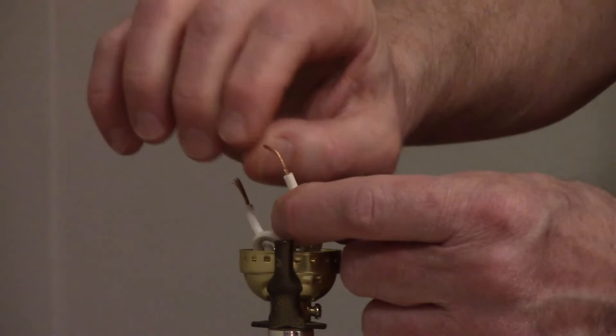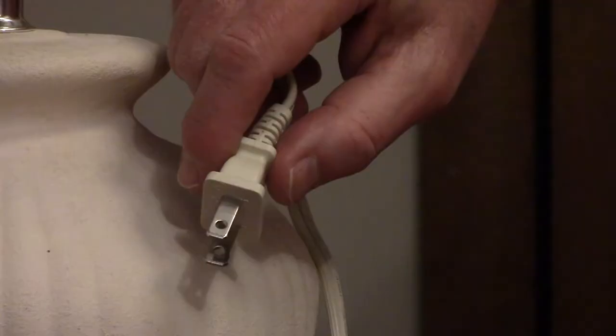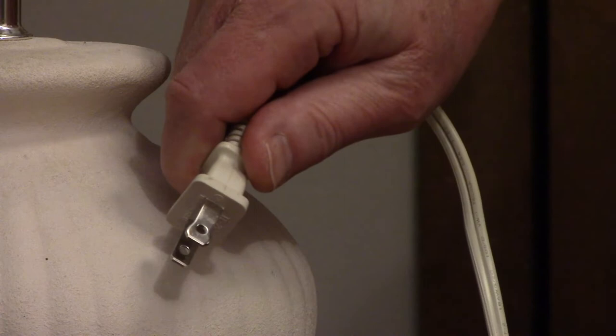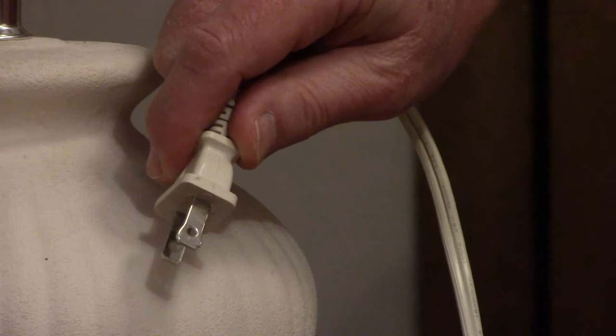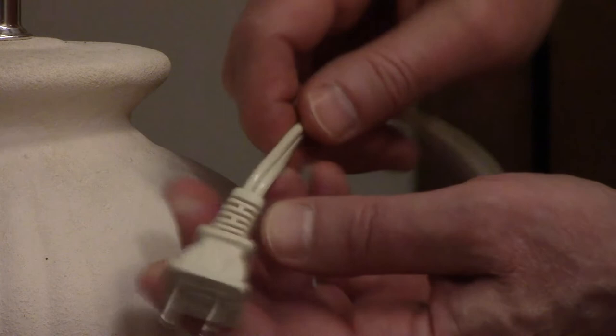On a polarized lamp plug, you have one blade that's narrow and one blade that's wide. The narrow blade is the hot wire. The wide blade is the neutral wire. The insulation on the side with the hot wire is smooth, and the insulation is ribbed on the wire that's neutral.